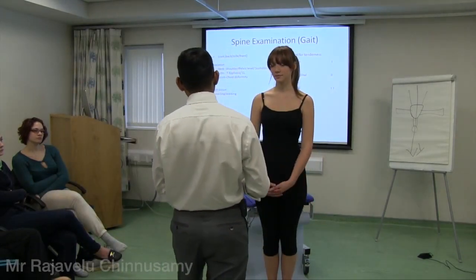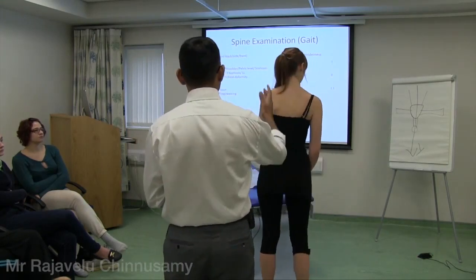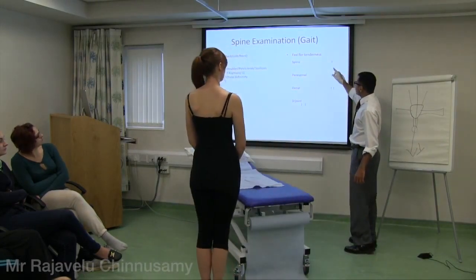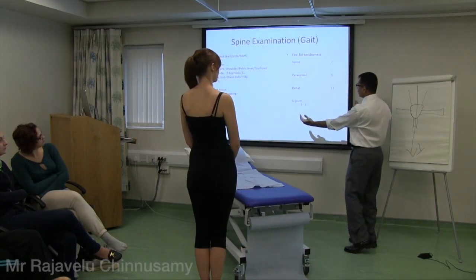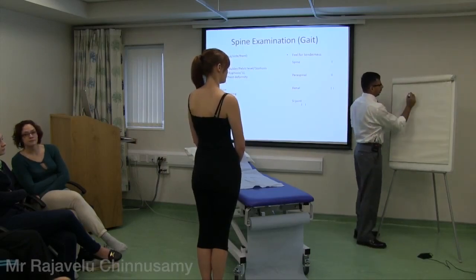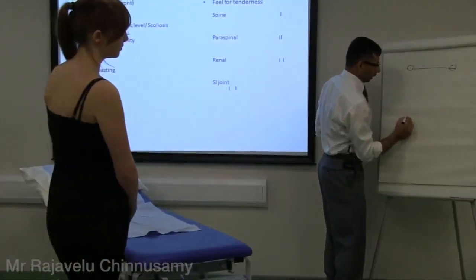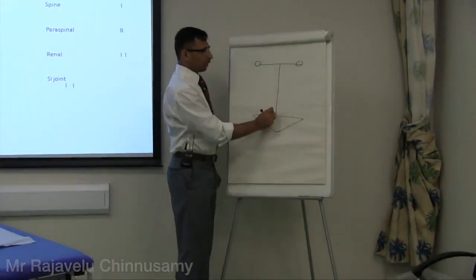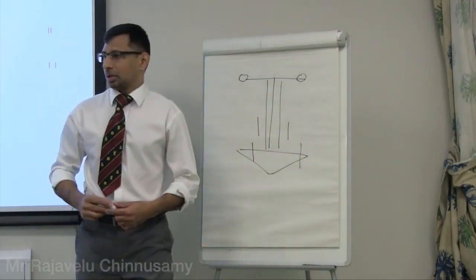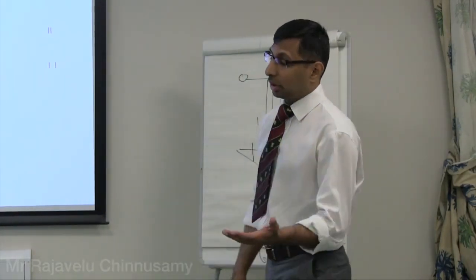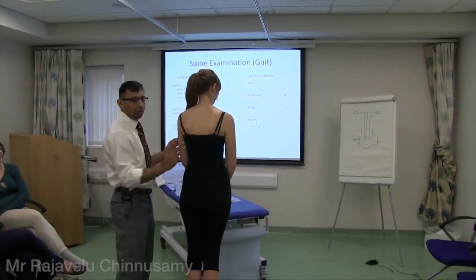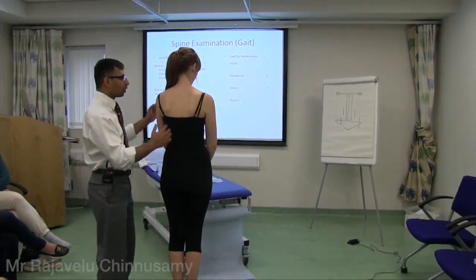Look is finished, now feel. Can you turn around for me please? It's the same for the cervical spine or thoracolumbar. The palpation points are: spine center, paraspinal slightly away, renal slightly away, and SA joint further away. Look for spinal tenderness, paraspinal tenderness, renal angle tenderness, and SA joint tenderness. I've seen patients with renal colic presenting as spinal pain. Always support the patient - don't let them fall. They may be fragile and not expect it.